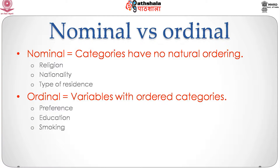Firstly, nominal versus ordinal categories. We have previously started to look at 2 by 2 tables, which involve two variables, both of which can be coded as binary variables. In this situation, it really does not matter if the categories can be ordered or not. But when we extend to a general K by L contingency table, categorical tables can be of many kinds.